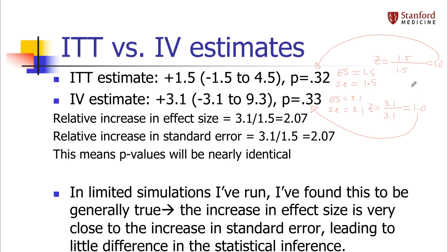These don't come out exactly the same, but they're extremely close. In limited simulations I've run, I've found this to be generally true — the relative increase in effect size is very close to the relative increase in standard error, so there's usually little difference in statistical inference. It might still be useful to provide the IV estimate because it gives readers a sense of the potential magnitude of the causal effect of treatment, but it's unlikely to change the inference.